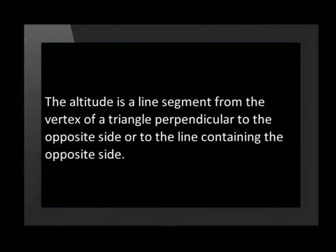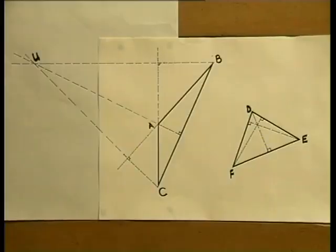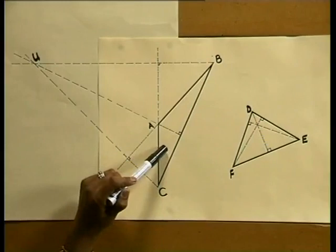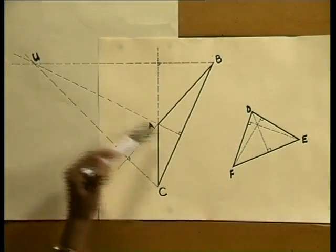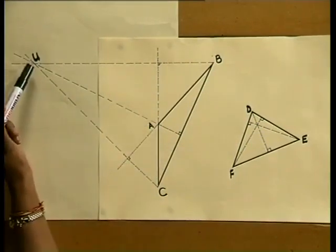For the next construction I will first give you the definition. This line is called the altitude or perpendicular height of the triangle. An altitude is a line segment from the vertex of a triangle perpendicular to the opposite side, or to the line containing the opposite side. In certain triangles the construction is very unusual — to construct the altitudes in this triangle I had to extend side CA and side BA, and the point where the altitudes intersect is on the outside of the triangle at point U.